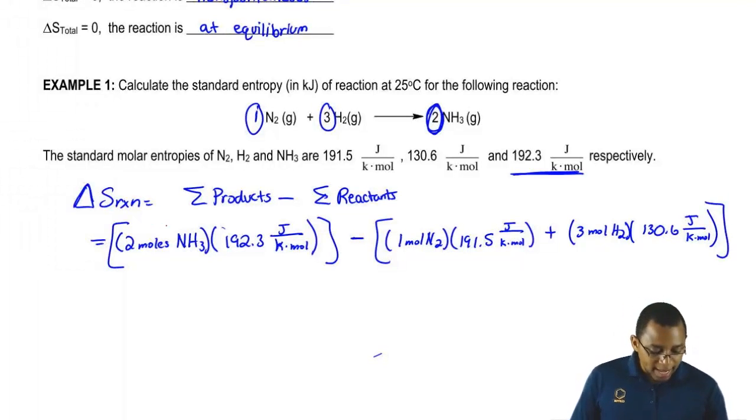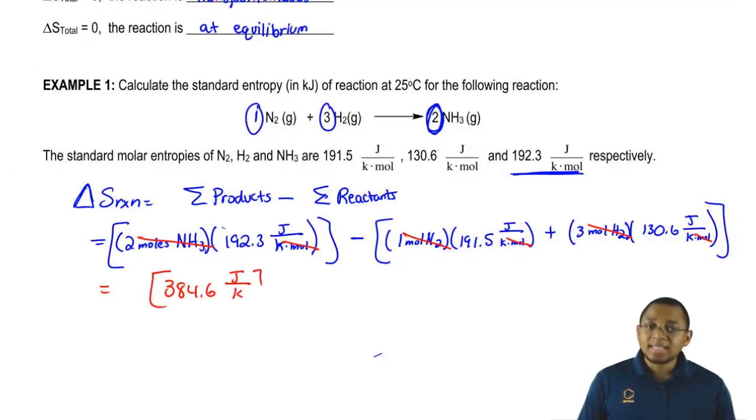Now, we can see that the moles will cancel out, and our units here will be in joules over Kelvin. When we multiply the 2 times the 192.3, that's going to give us 384.6 joules over Kelvin minus everything inside of our reactants boxes, that comes out to 583.3 joules over Kelvin.